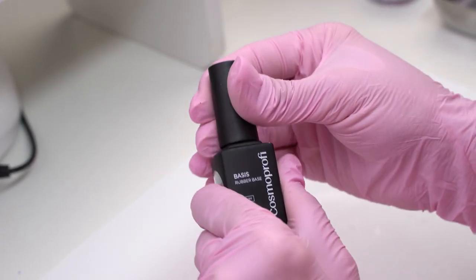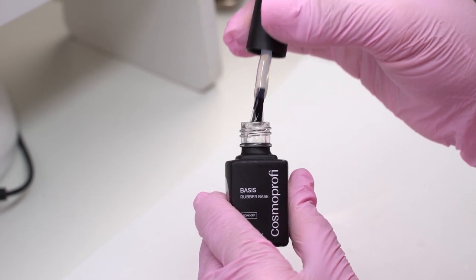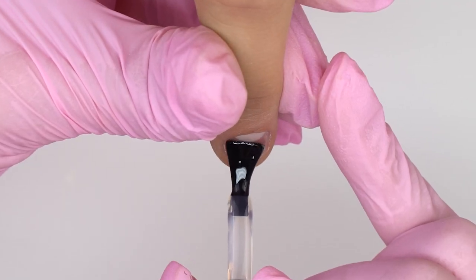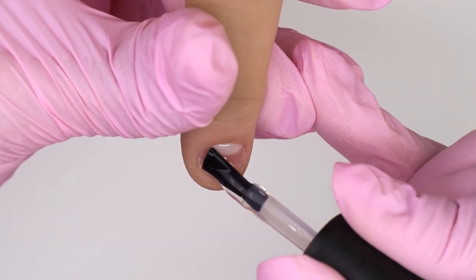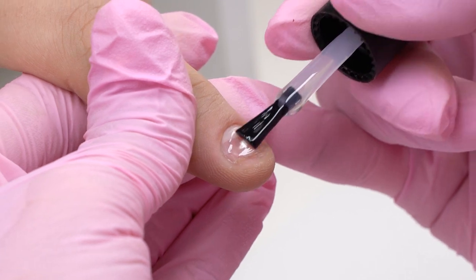Before sculpting, we need to apply a thin layer of a rubber base coat. Try to avoid getting on the skin. To cover up the free edge, I place the brush perpendicularly and carefully paint it.